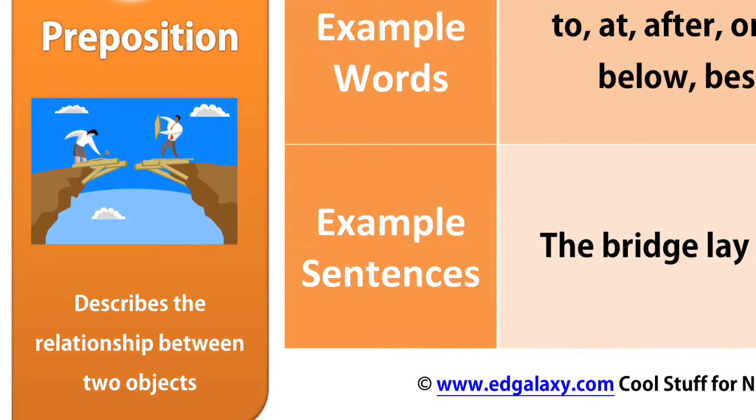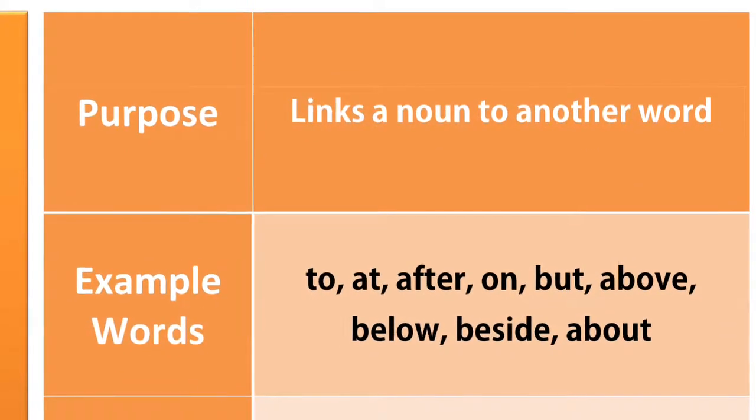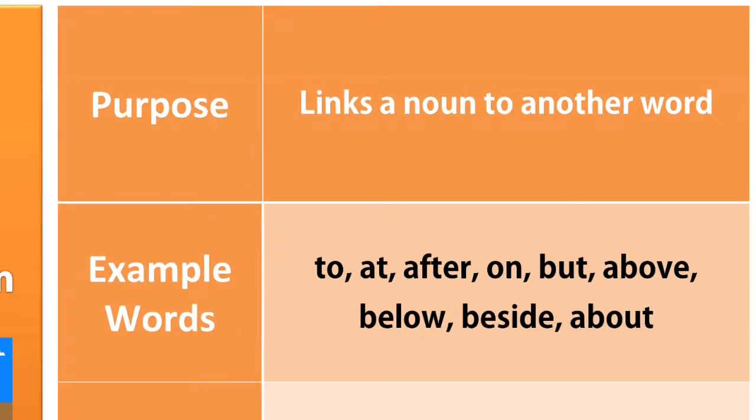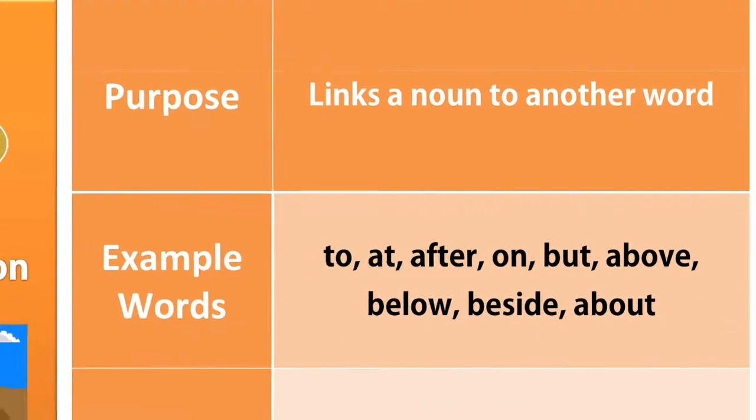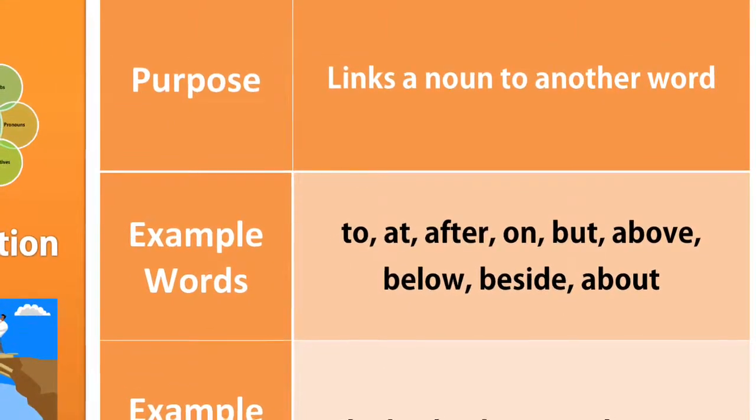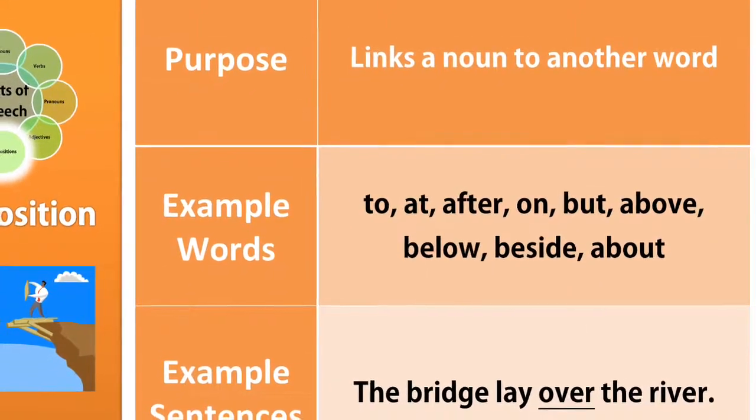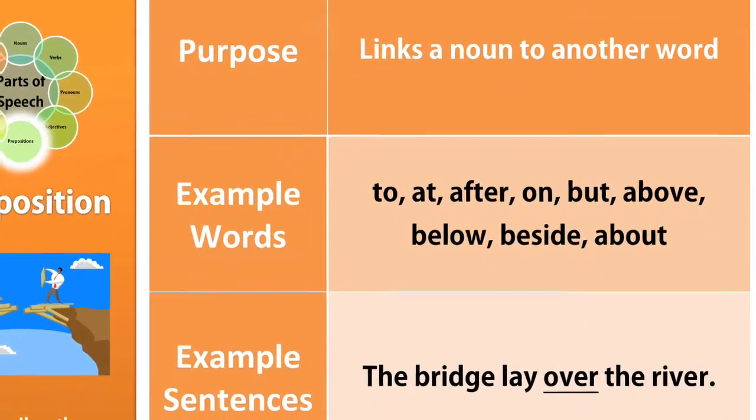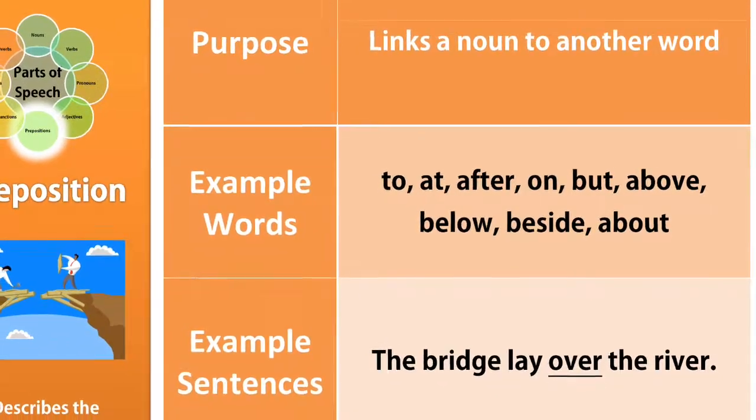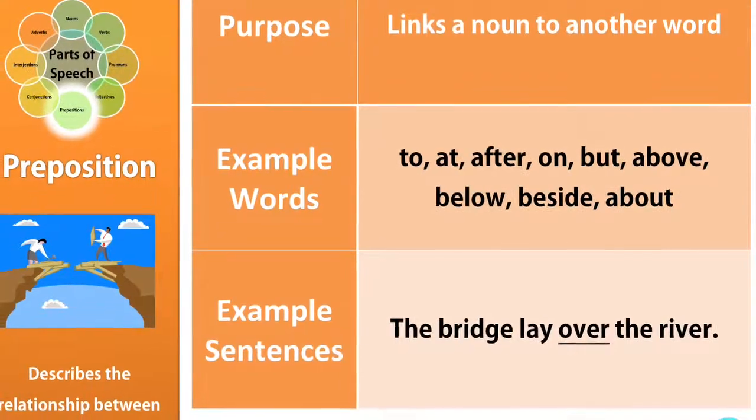Preposition. A preposition describes a relationship between two objects. Its purpose: it links a noun to another word. Example words: to, at, after, on, but, above, below, beside, about. Example sentences: The bridge lay over the river. It just talks about its position. Where is it?